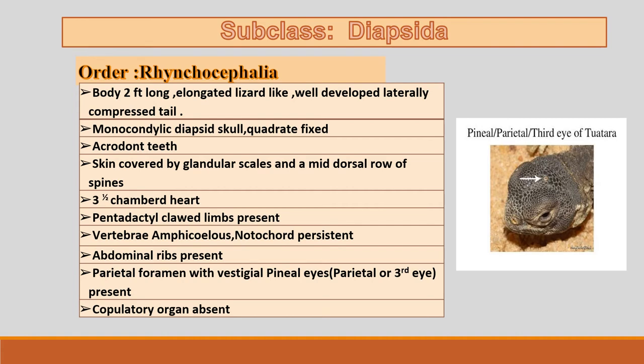Subclass Diapsida consists of three orders: Rhynchocephalia, order Squamata, and order Crocodilia. In order Rhynchocephalia, the body is elongated and lizard-like. The skull is diapsid. The skin is covered by granular scales and a mid-dorsal row of spines. Limbs are pentadactyl, clawed, and burrowing.